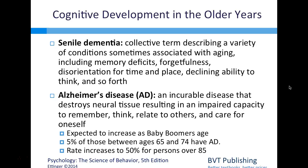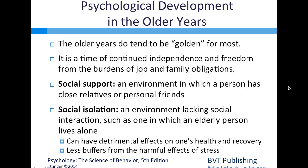One form of senile dementia is Alzheimer's disease—an incurable disease that destroys neural tissue, resulting in impaired capacity to remember, think, relate to others, and care for oneself. Alzheimer's accounts for 60% of all cases of senile dementia in people over 65. Five percent of those between ages 65 and 74 have Alzheimer's disease, and the rate increases to 50% for persons over 85. Significant research is currently ongoing to find a cure or prevention.